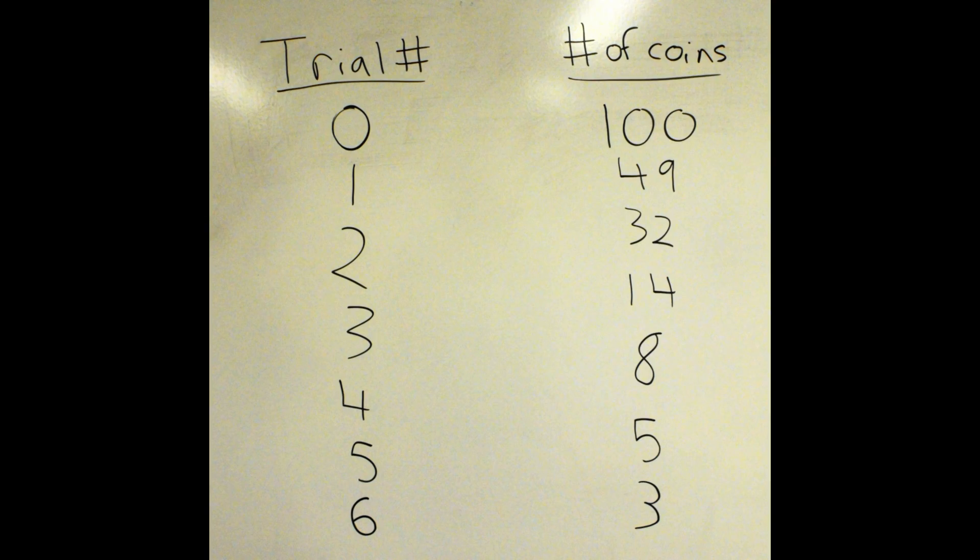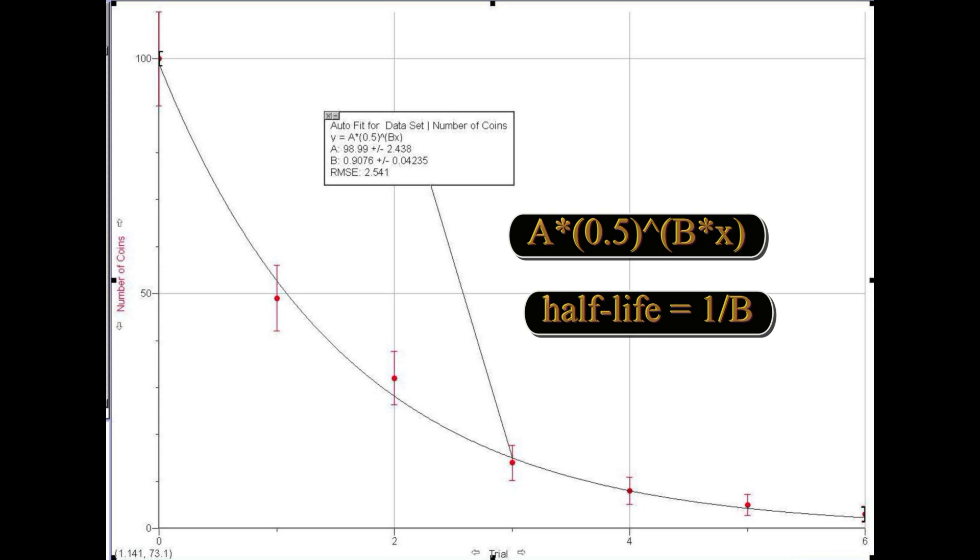Record the number of coins remaining for each trial number, including 100 coins when the trial number is 0. Plot the number of coins remaining versus the trial number. Adding results from all groups will reduce the relative error considerably.